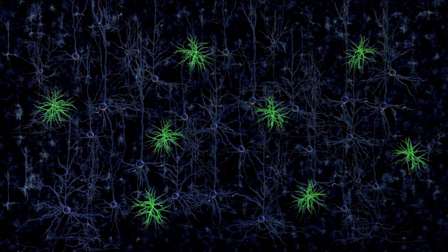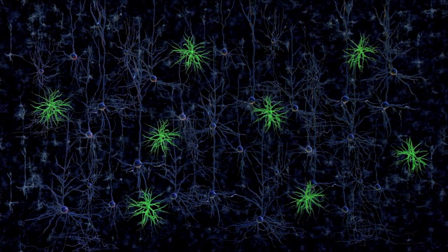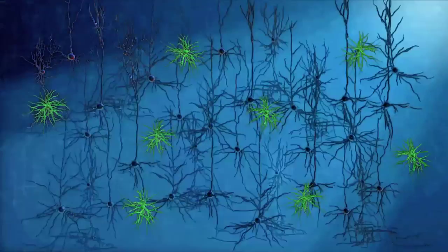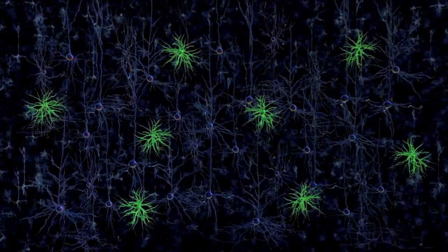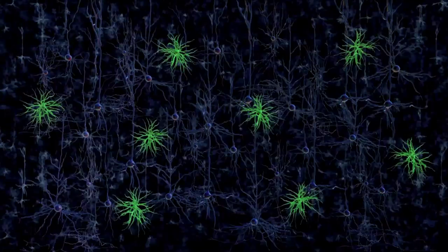For example, researchers can deliver the piece of DNA that encodes for channelrhodopsin into a set of basket cells, shown here in green. Then, pulses of blue light activate only the basket cells, while the other cells, for example, the neighboring pyramidal cells, are not affected.